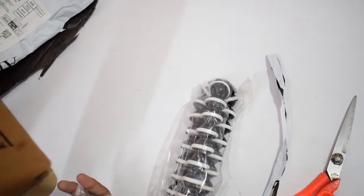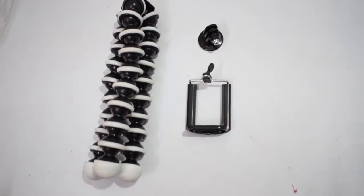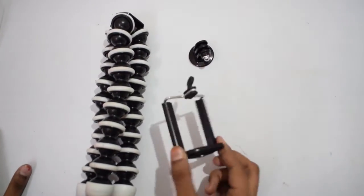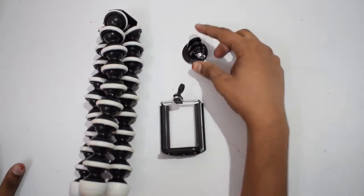This is the tripod. This is the third box. This is the phone and this is the action camera.